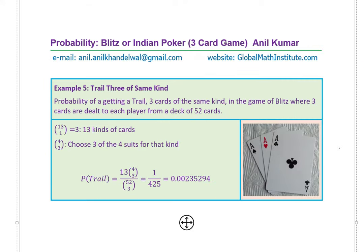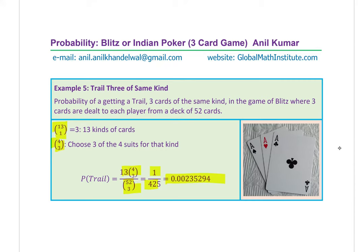The highest-ranking hand is the trail: three of the same kind. We select one of 13 kinds (13C1) and take all three from that kind (4C3), then divide by the total combinations. This gives 1/425, which is 0.00235, so only 0.23% chance of getting a trail in the game of Indian Poker.